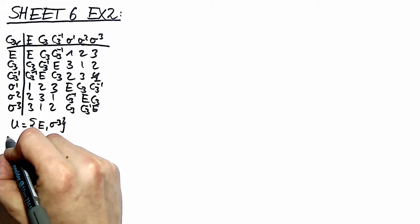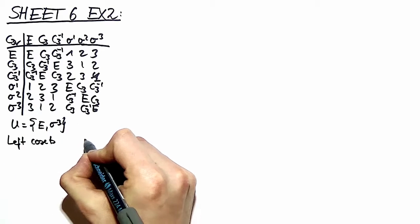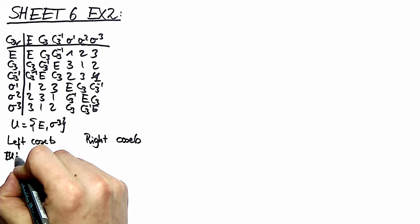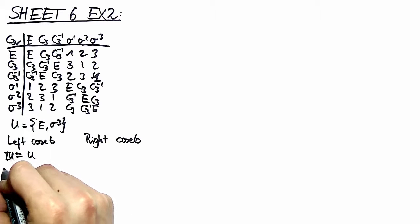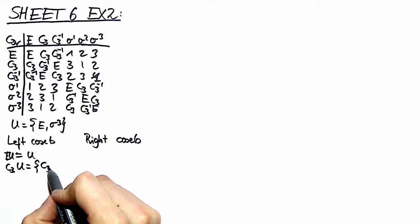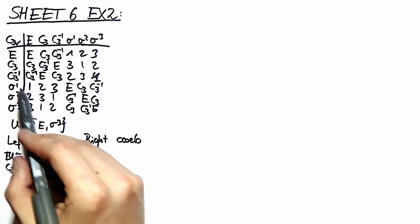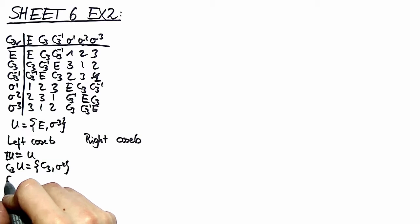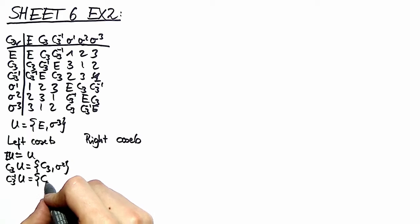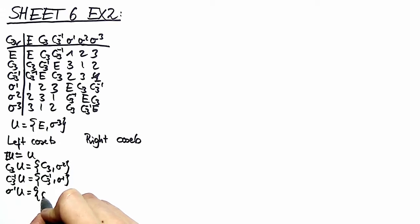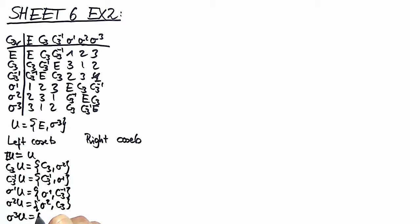Now we want to investigate the difference between left cosets and right cosets. The left coset E times U is equal to U — this is of course trivial. The next left coset we can construct is C3 times U, which equals C3 times the identity, giving C3, and C3 times sigma3, which can be read out over here, is sigma2. We can do this with all elements of C3V: C3⁻¹ times U is {C3⁻¹, sigma1}, sigma1 times U is {sigma1, C3⁻¹}, sigma2 times U is {sigma2, C3}, and sigma3 times U is U again.